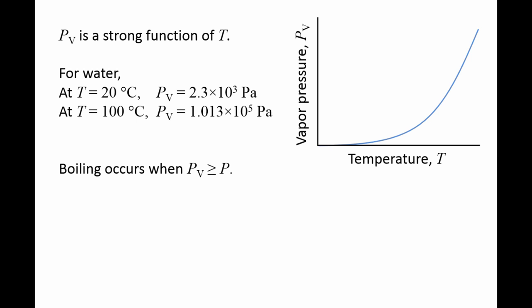If the local pressure falls below the vapor pressure, the liquid will spontaneously form vapor bubbles in a process called boiling. If you place a pot of water at 20 degrees into a vacuum chamber and remove air from the chamber, the pot of water will start boiling when the pressure drops below 2,300 Pascals.